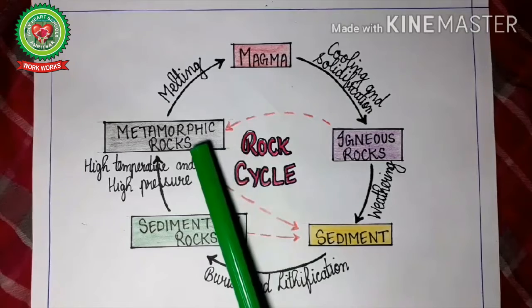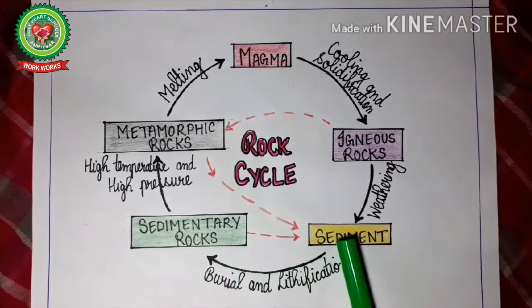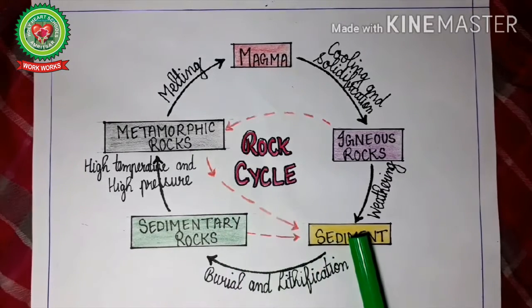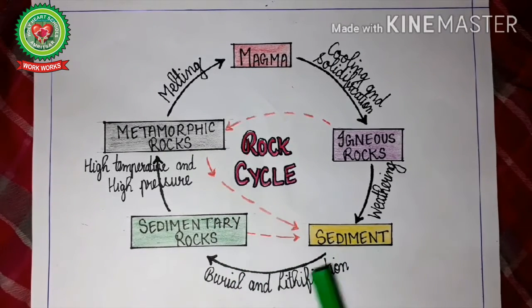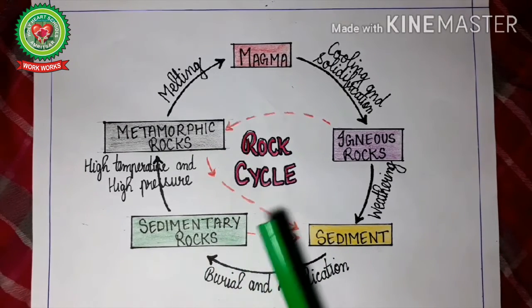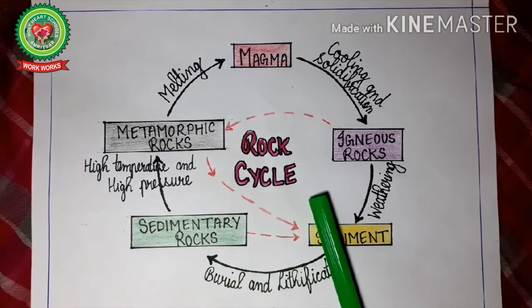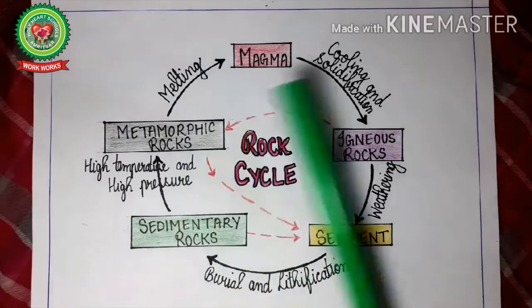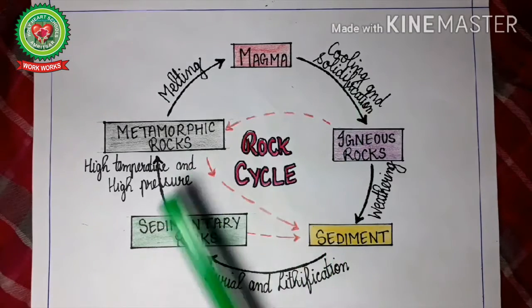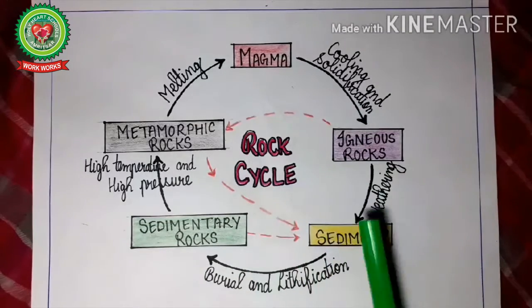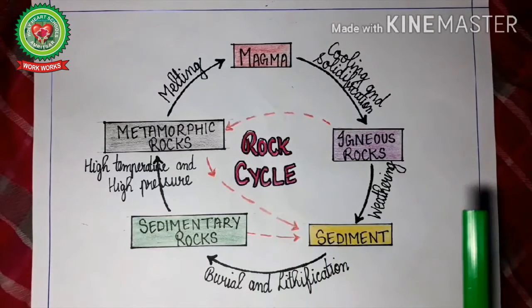Metamorphic rocks when eroded change into sediment, which again leads to the formation of sedimentary rocks. So the rock cycle is a continuous cycle — a vicious cycle — which goes on on the earth.